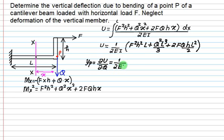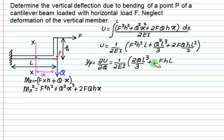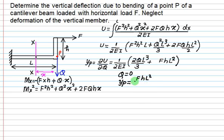So 1 upon 2EI: the first term is 0, the second term is 2Q times L cubed upon 3, plus 2 times F times H times L squared by 2 — the 2 will be cancelled. And finally, we put Q equal to 0. So the final displacement YP equals F times H times L squared divided by 6EI.